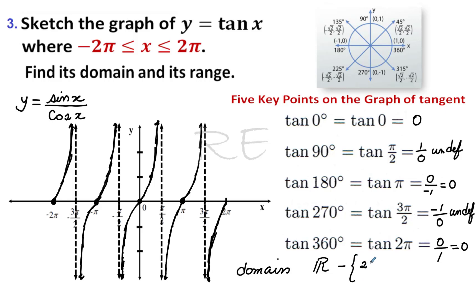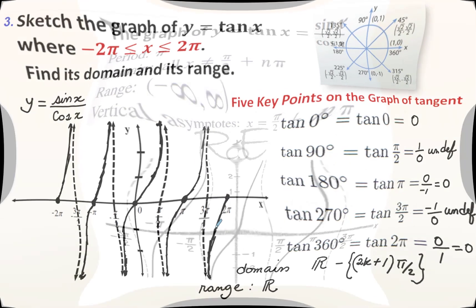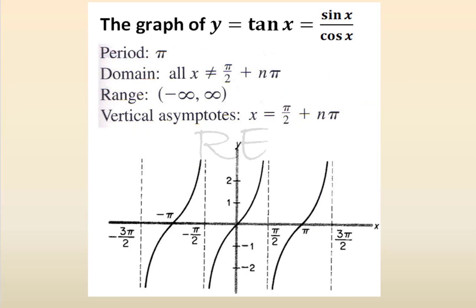The domain is all real numbers except at multiples of pi over two. So it's the reals minus two k plus one, multiplied by pi over two. The range goes from negative infinity to positive infinity — y goes from negative infinity to positive infinity, so the range is all real numbers.